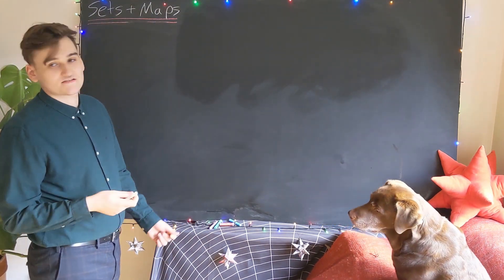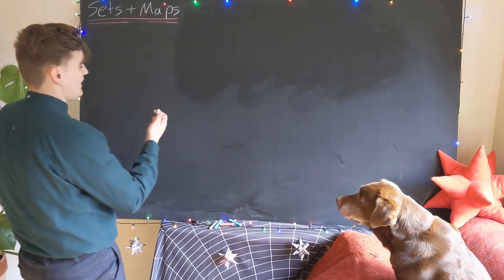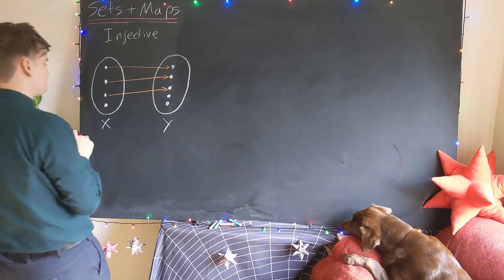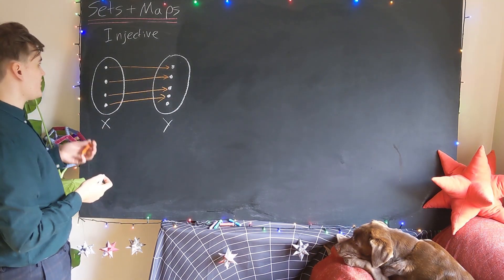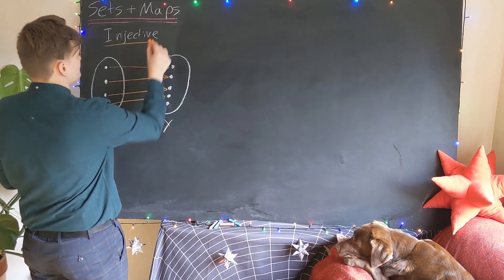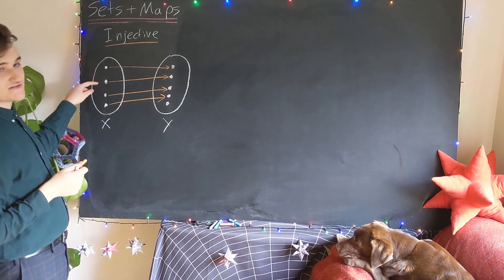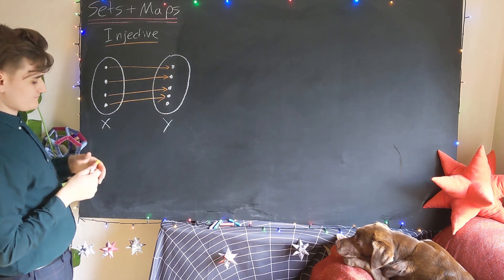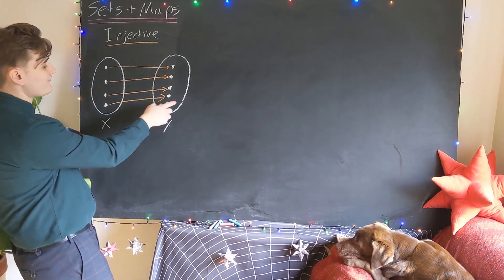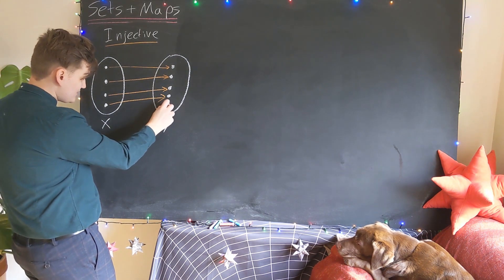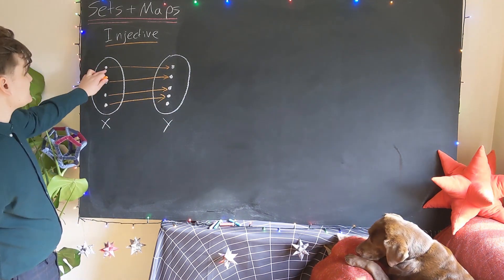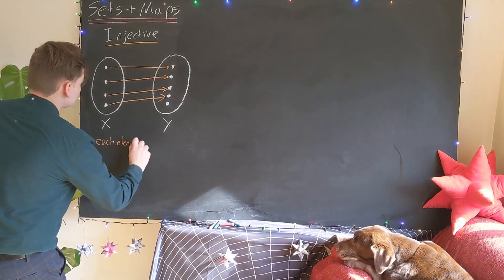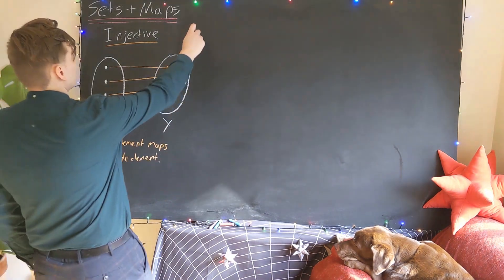The first class of map is called an injective map, which means that every element in the domain is mapped to a single element in the codomain. We don't necessarily map to every element in the codomain — there could be an element which isn't hit by the map — but each domain element can only map to a single codomain element.